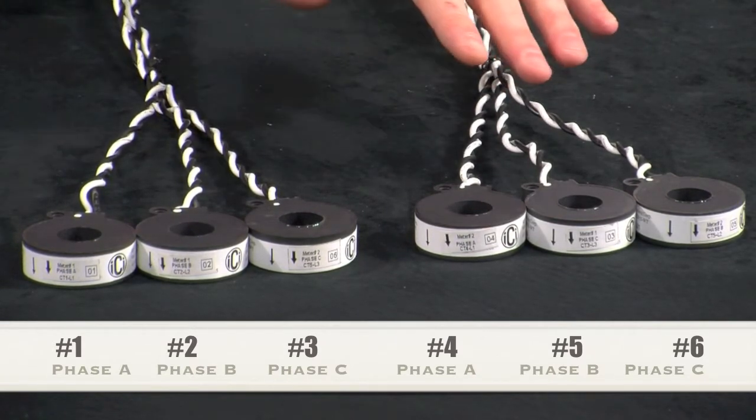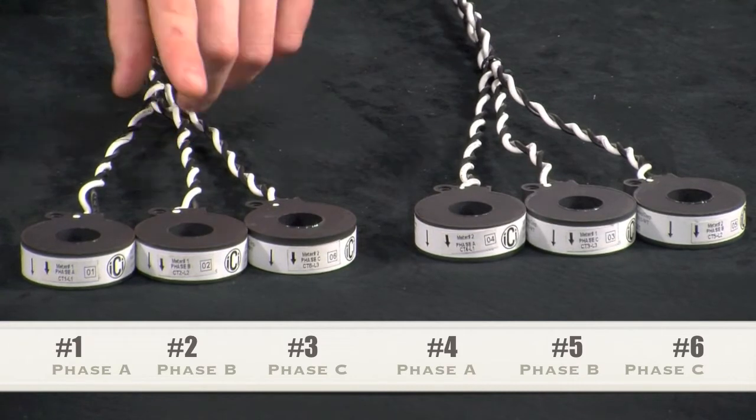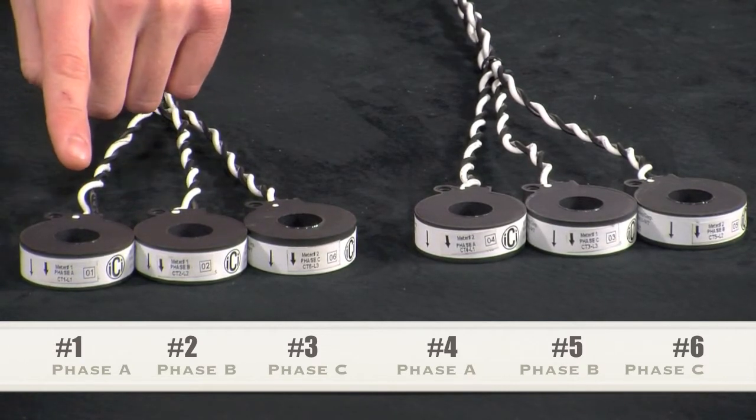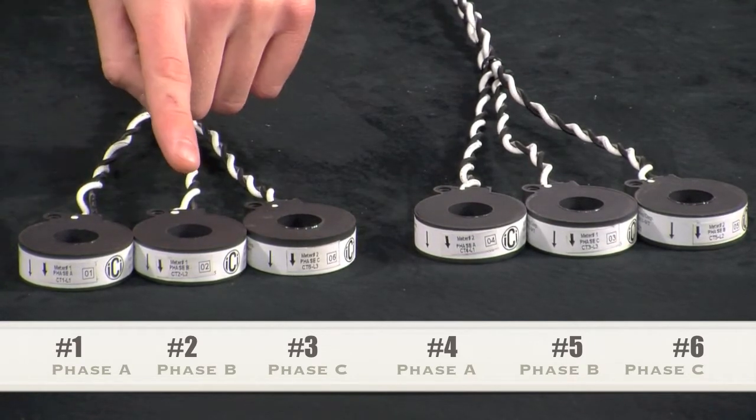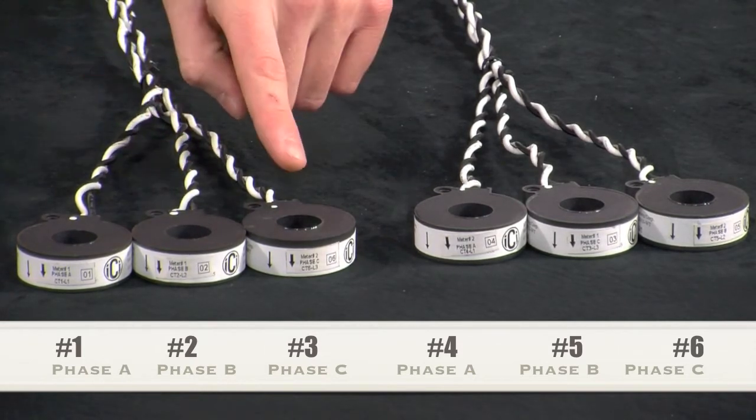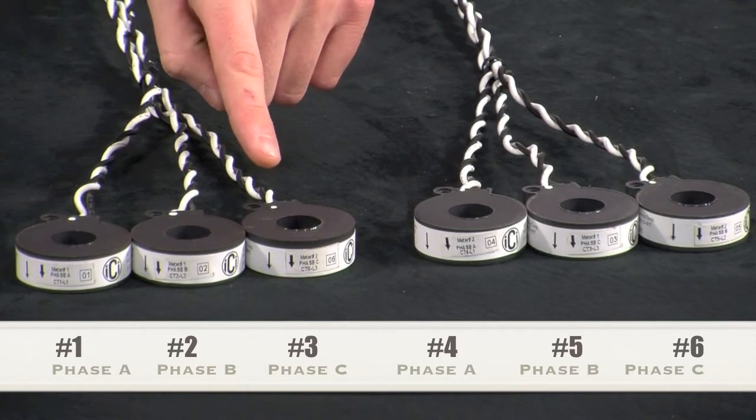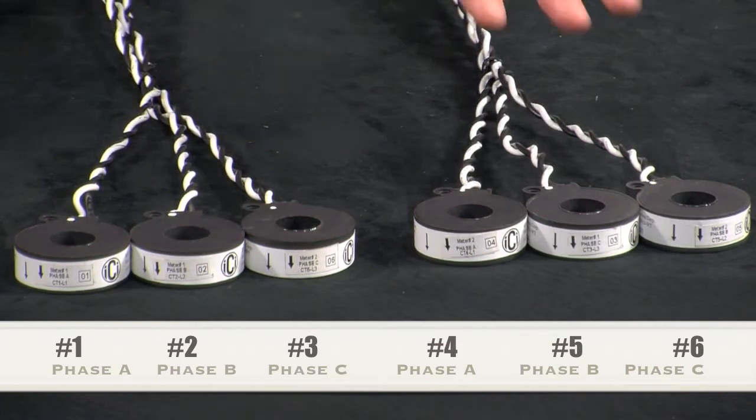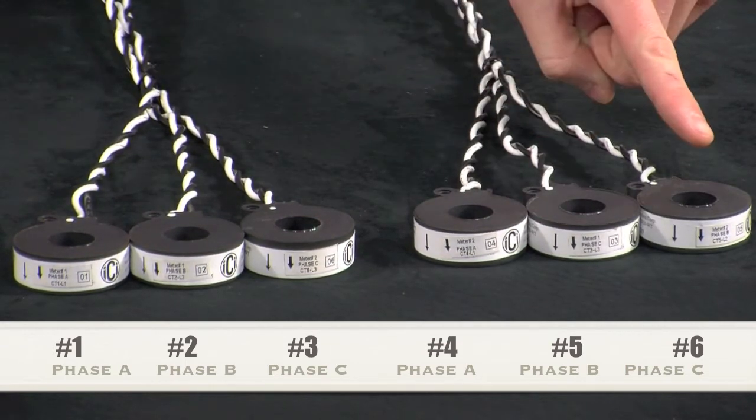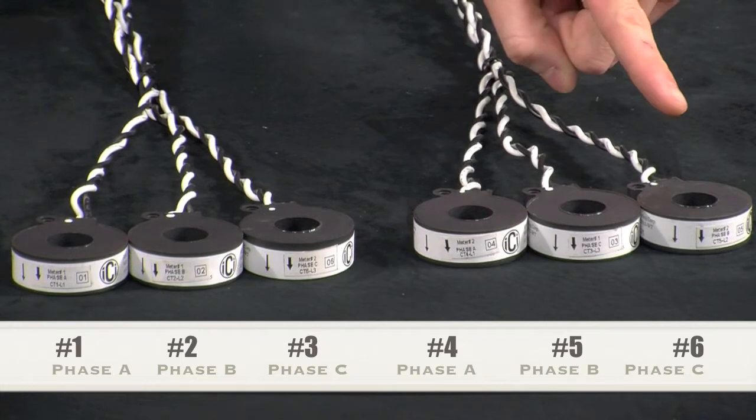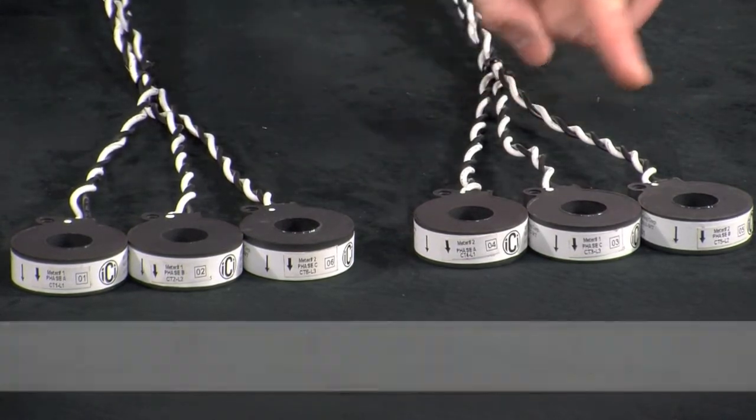Within those metering points, each CT is designated for a certain phase. For meter 1, CT 1 is for phase A or line 1, CT 2 is for phase B or line 2, and CT 3 is for phase C or line 3. For meter 2, CTs 4, 5, and 6 are for phase A, B, and C, or line 1, 2, and 3, respectively.